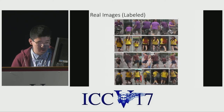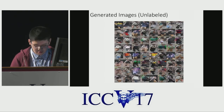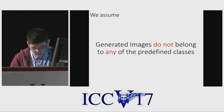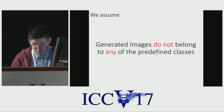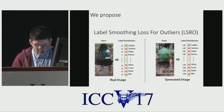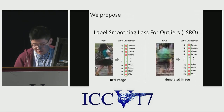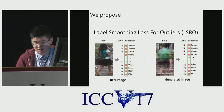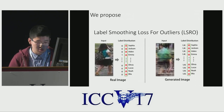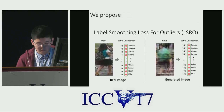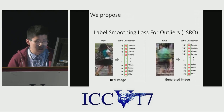Here I show some real images which have identity labels, and generated images which do not have a label. We assume generated images do not belong to any of the pre-defined classes, so we set a different policy for real images and generated images. Real images are set to 1 for their target class and 0 for other classes, while generated images do not belong to any class. One straightforward idea is to set a uniform distribution for all classes. We call this policy LSRO.